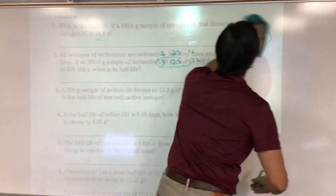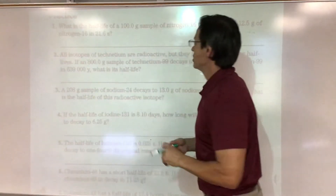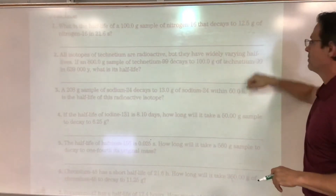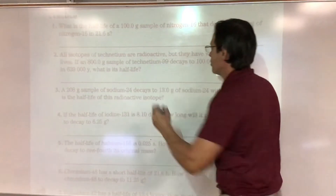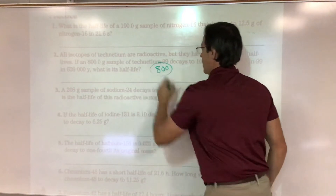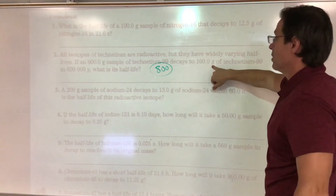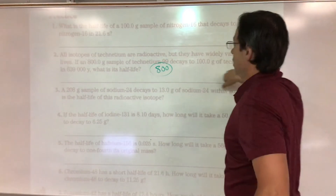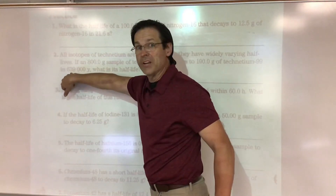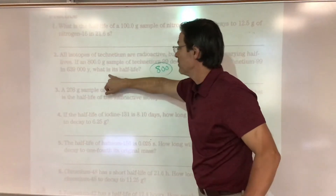Number two: all isotopes of titanium are radioactive but have widely varying half-lives. I have an 800-gram sample that goes down to 100 grams, and this happened over 639,000 years. Same approach — I need to find the half-life.